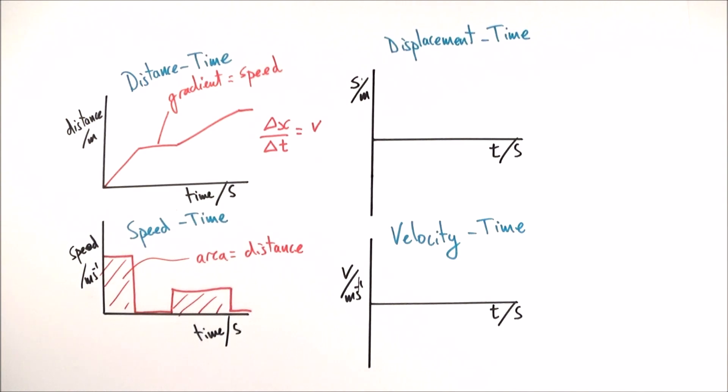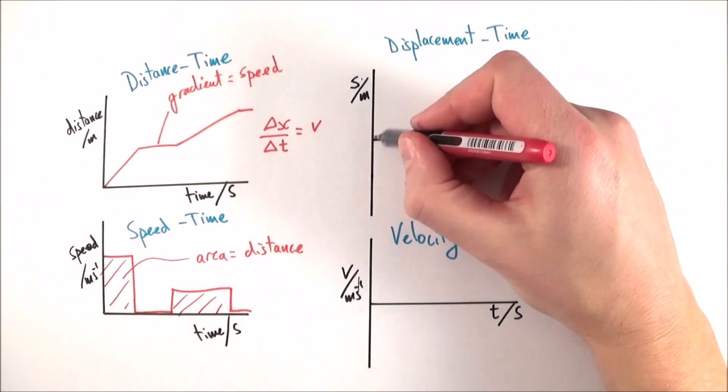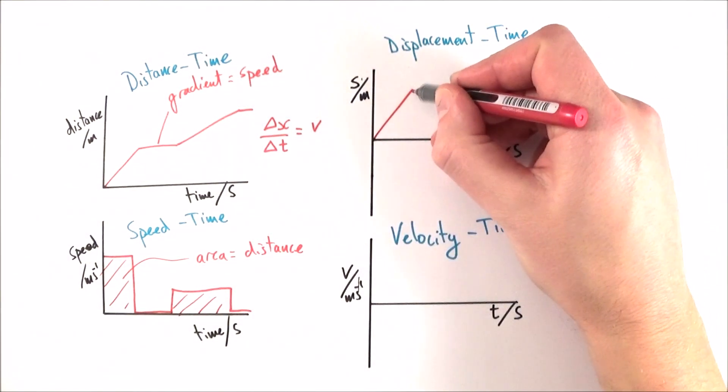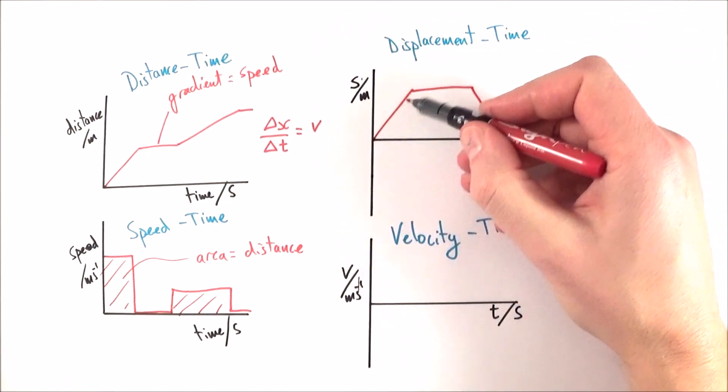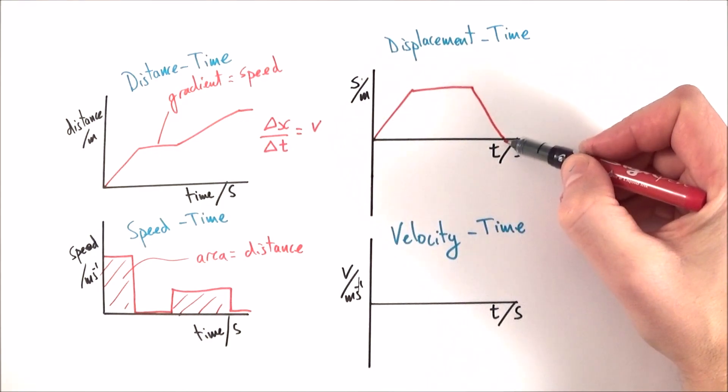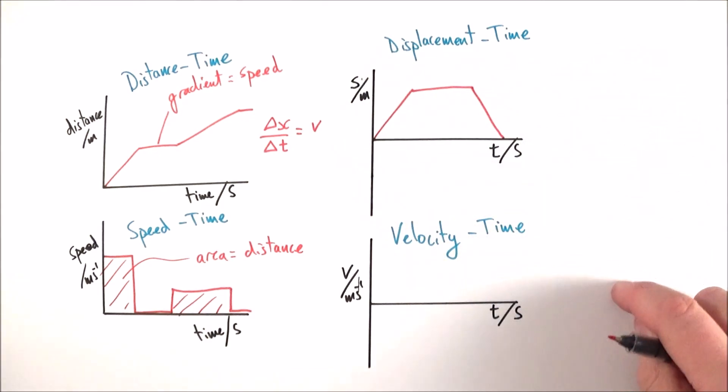So perhaps we have an example where an object maybe moves away, comes to a halt, and then moves back to the starting position. So we can see at the end, the total displacement is zero. So this might be a ball moving up and down, or it might be something that goes away and then comes back again.